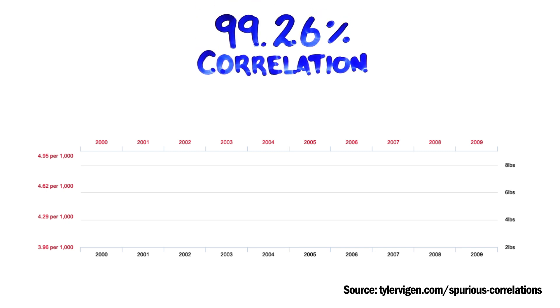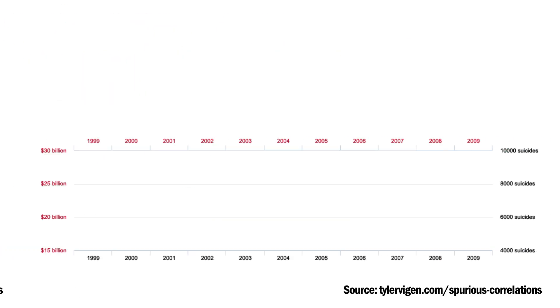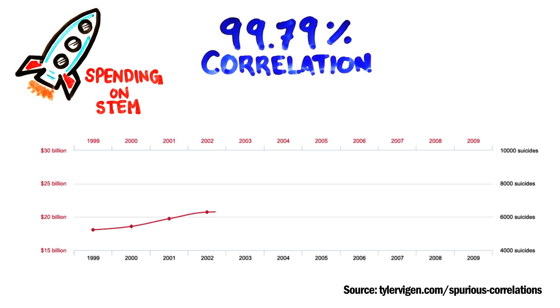Or how about the fact that there's a 99.26% correlation between the divorce rate in Maine and the per capita consumption of margarine? Or a 99.79% correlation between spending on science, space and technology, and the number of suicides by hanging, strangulation and suffocation?